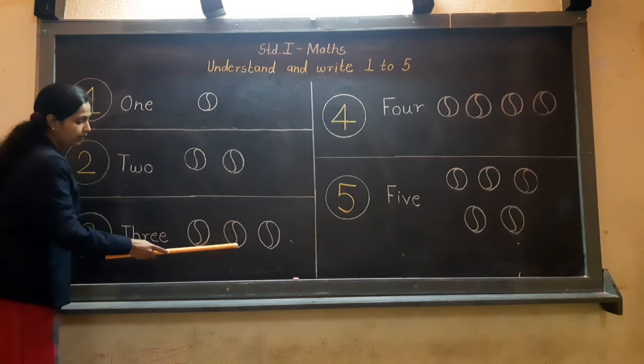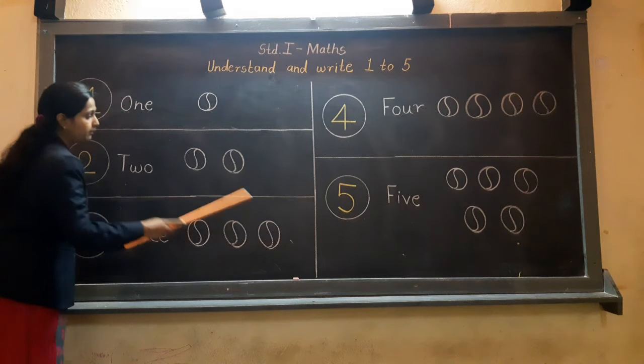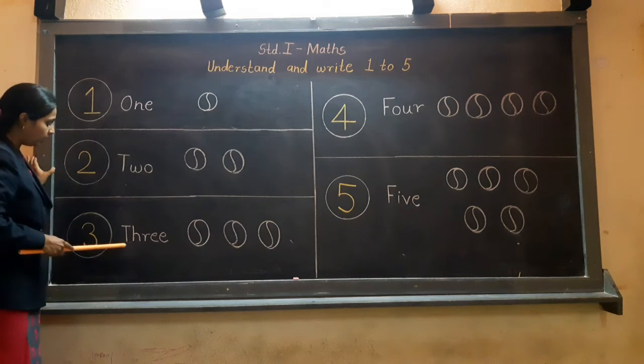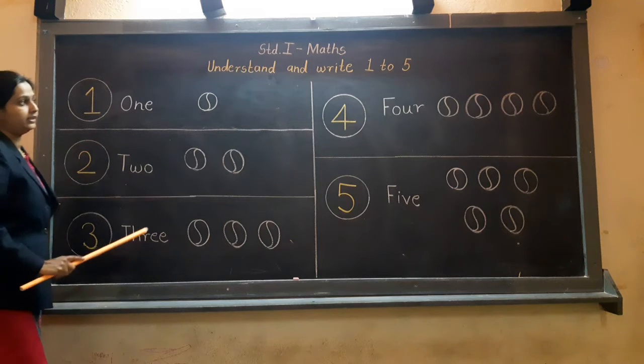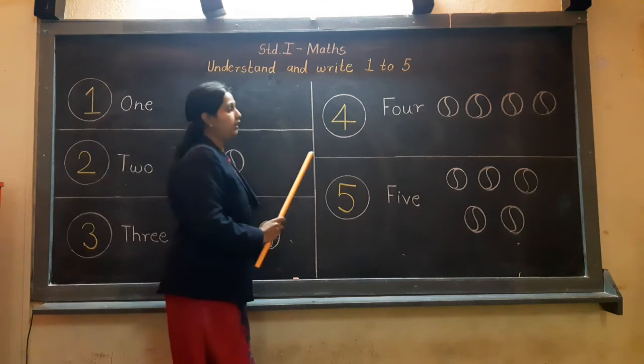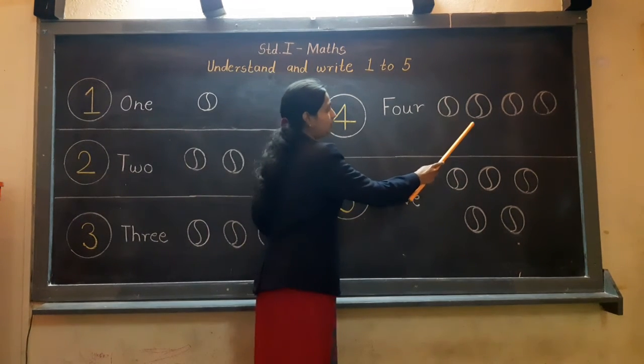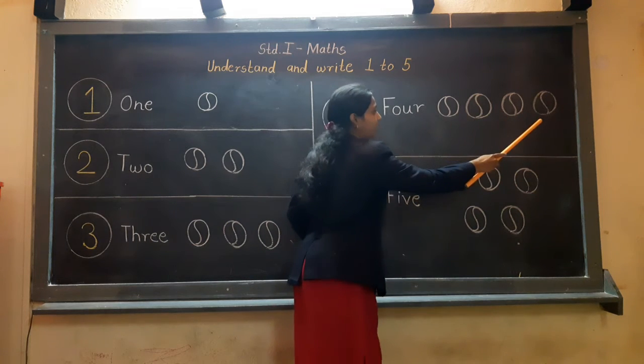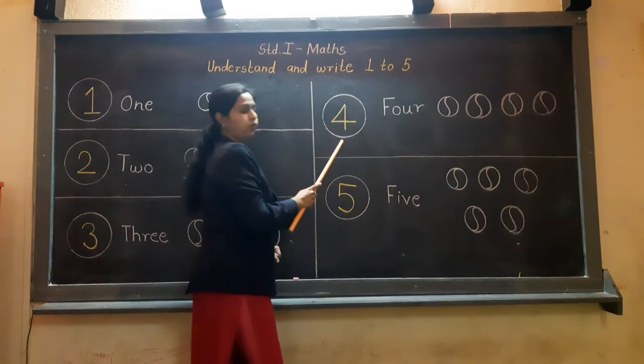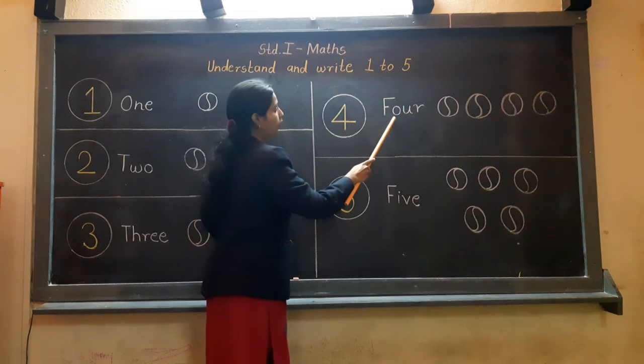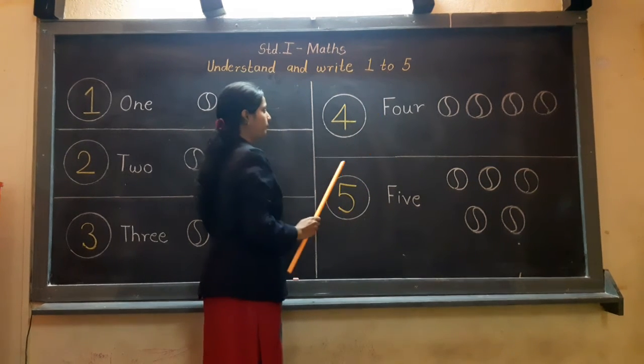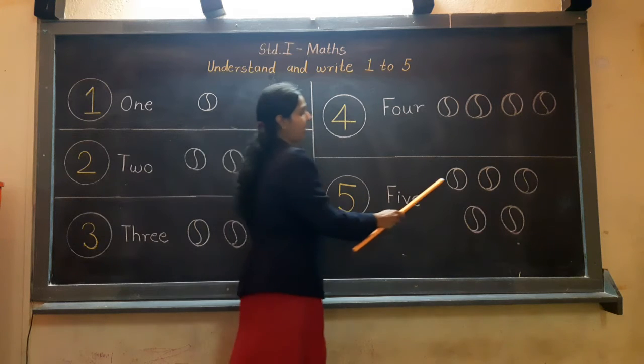1, 2, and 3. Number 3 is spelled T-H-R-E-E. Let's count: 1, 2, 3. And number 4: F-O-U-R, four. Counting: 1, 2,